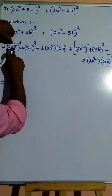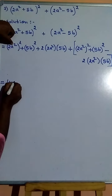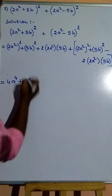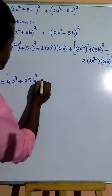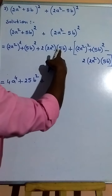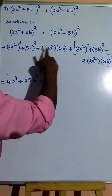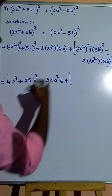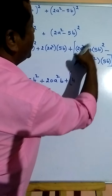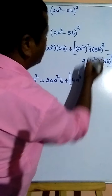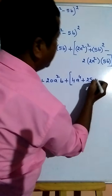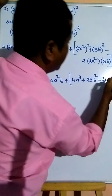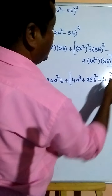Now expanding: 2 squared is 4, so (2a²) whole square gives 4a to the power 4. Then 5 squared is 25, so (5b) whole square gives 25b squared. Plus 2 times 2a² times 5b gives 20a squared b. For the (a - b) whole square part: 4a to the power 4 plus 25b squared minus 20a squared b, using capital bracket.